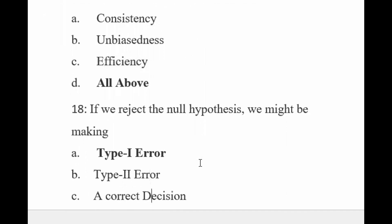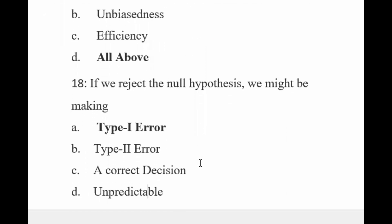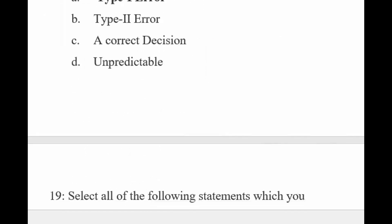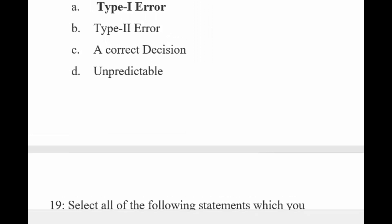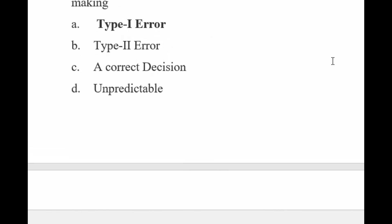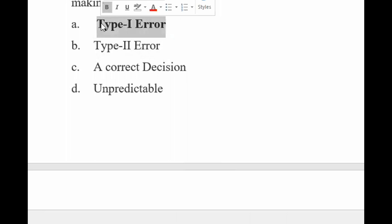If we reject the null hypothesis, we might be making what type of error? If we reject the null hypothesis and the null hypothesis is supposed to be true, we are making a Type I error.